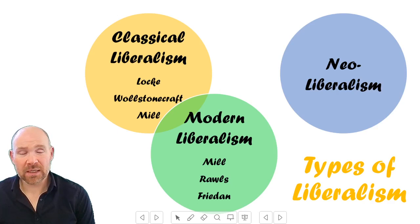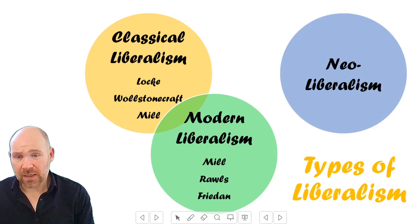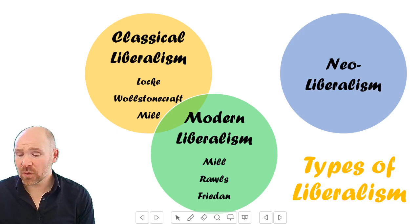The thinkers generally split between the two types. In classical liberalism we've got Locke, Wollstonecraft, and Mill. In modern liberalism we've also got Mill, Rawls, and Friedan. The reason why Mill is in both is because he's the thinker that transitions between the two — there are elements of his work that go more into classical liberalism and elements that push forward to modern liberalism.